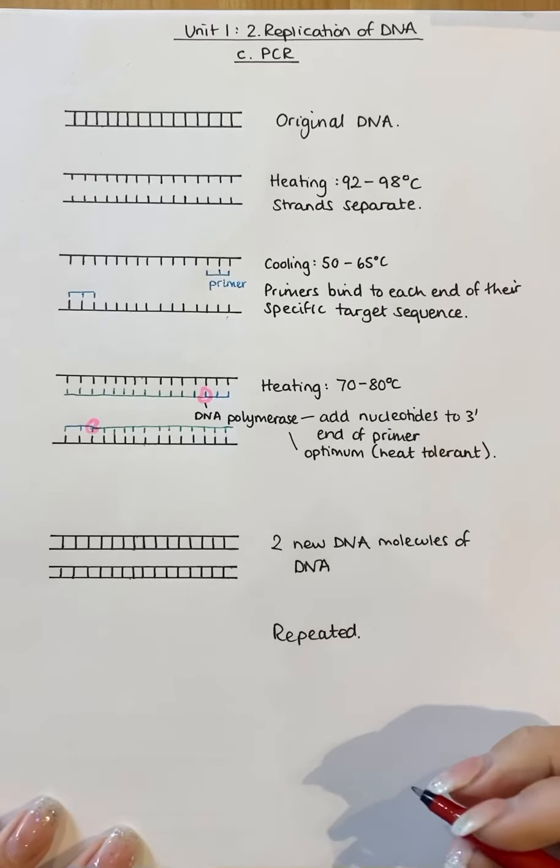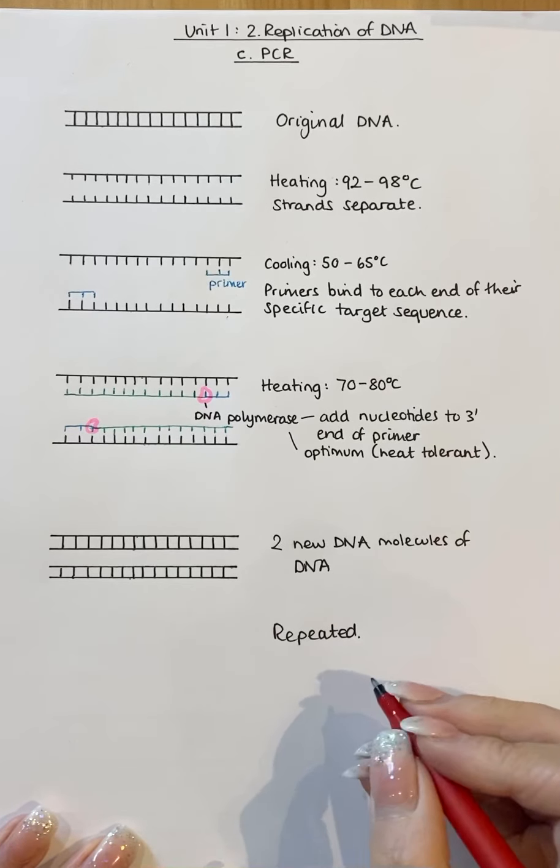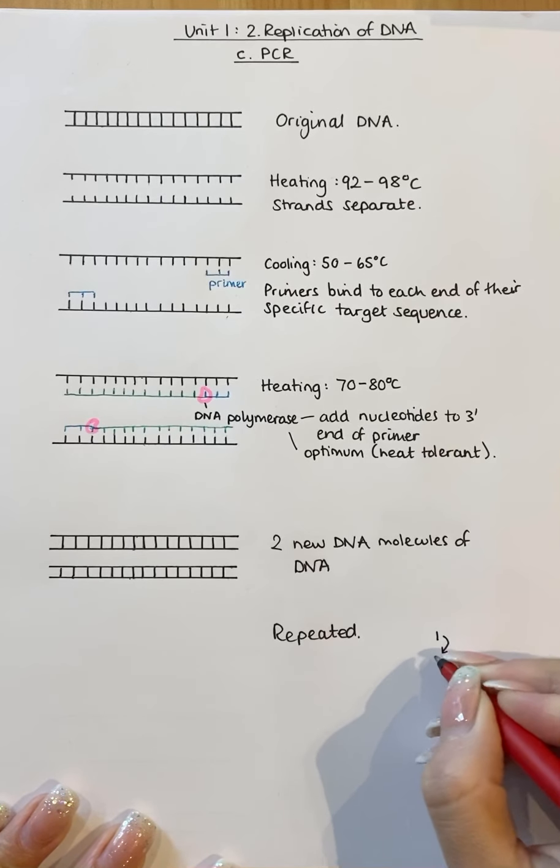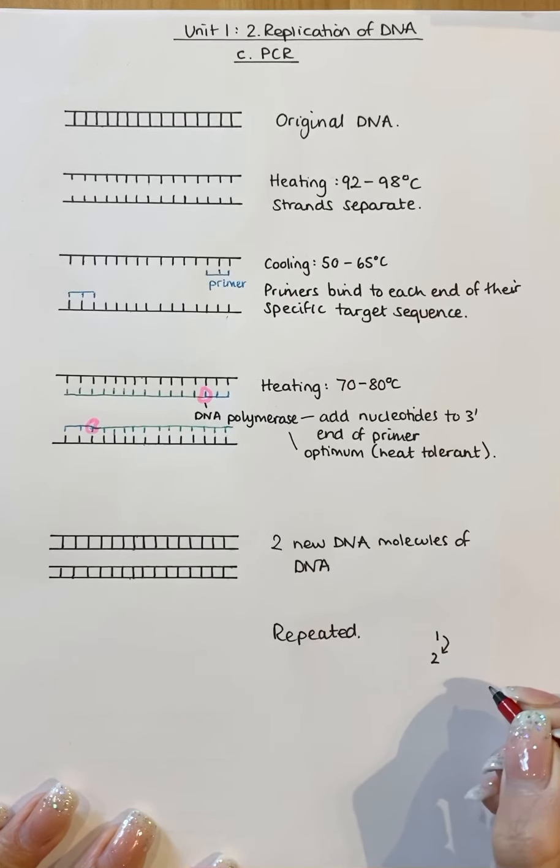So with that then, in a similar way to cell division, if you begin with one molecule of DNA, you would produce two after one cycle.